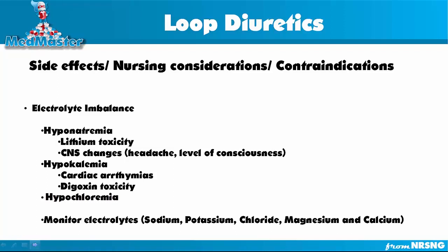As we discussed with the mechanism of action, loop diuretics affect many electrolyte reabsorption processes in the kidneys. The first side effect is electrolyte imbalance. The first is hyponatremia. When we cover lithium medication for bipolar disorder, we'll explain why hyponatremia can cause lithium toxicity. Since this medication can cause hyponatremia, patients on lithium for bipolar disorder are at risk for serious lithium toxicity. Hyponatremia can also cause central nervous system changes such as headaches and changes in level of consciousness.